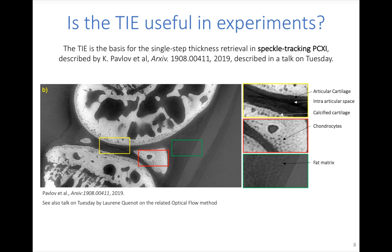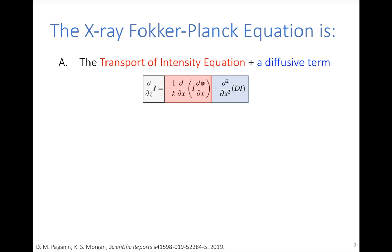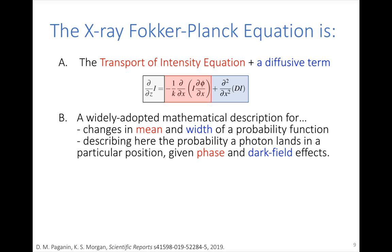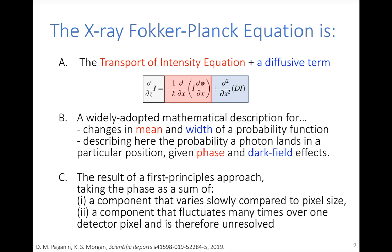The X-ray Fokker-Planck equation can be thought of as the transport of intensity equation plus an extra term describing the dark field signal. It describes changes to the beamlet mean and width to capture phase and dark field effects. A first-principles derivation is also possible by decomposing the wave field phase into a slowly varying component (resolved phase effects) and a rapidly fluctuating component that is unresolved within a detector pixel, giving rise to dark field.